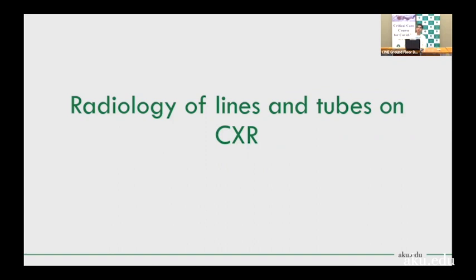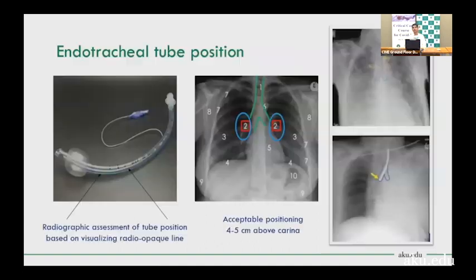The next topic is radiology of lines and tubes on chest x-ray. For endotracheal tubes, there is a radio-opaque line visible on x-ray. The acceptable position of the endotracheal tube should be 4–5 cm above the carina. Carina can sometimes be difficult to identify if x-ray quality is poor.